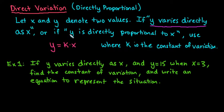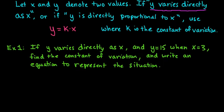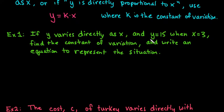So x and y just represent any two values. If y varies directly as x, or if y is directly proportional to x, we're going to use the equation y equals kx, where k represents the constant of variation. I have a couple of examples to go through. The first one is: if y varies directly as x, and y equals 15 when x equals 3, find the constant of variation and write an equation to represent the situation.